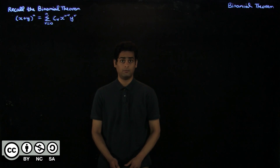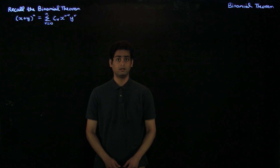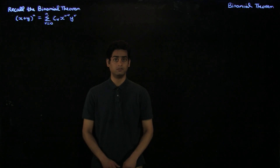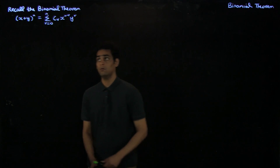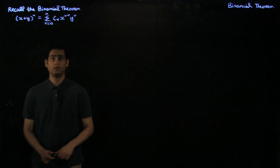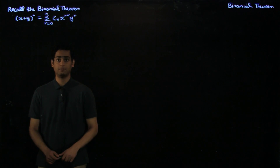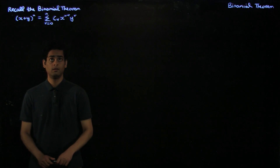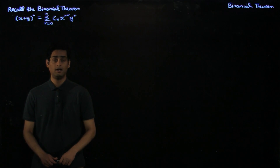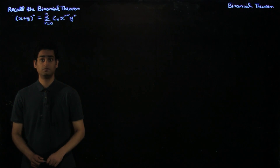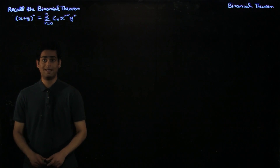Welcome to a new lecture on the binomial theorem. In this lecture, we will look at certain divisibility results which can be derived based on the binomial theorem. Recall the binomial theorem is given by (x + y)^n = summation r equal to 0 to n, nCr, x^(n-r), y^r, where we use cr to denote nCr.